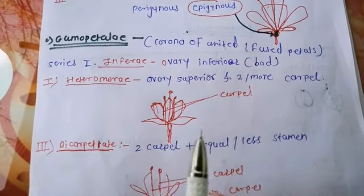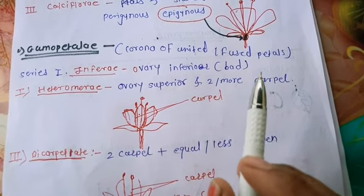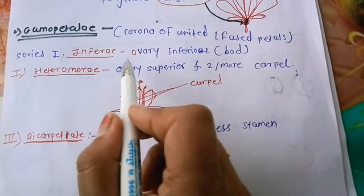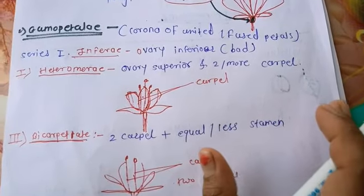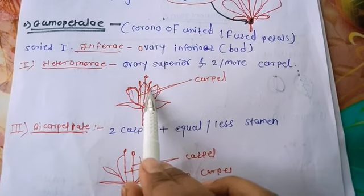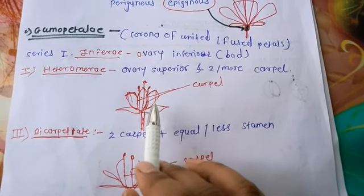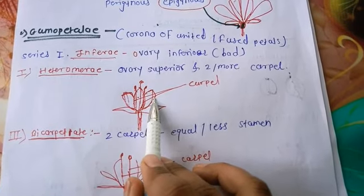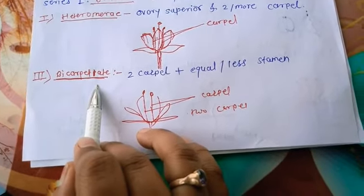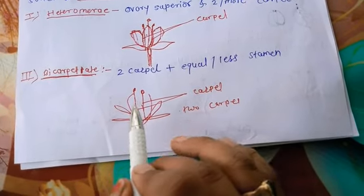The second type under dicotyledon is gamopetaly, where petals are fused forming a corolla. Series of gamopetaly include: inferi, meaning the ovary is inferior; and heteromeri, meaning the ovary is superior with two or more carpels. Looking at the diagram, we can see sepals and carpels around the ovary. The gynoecium has two carpels present.